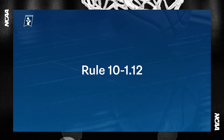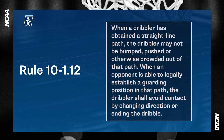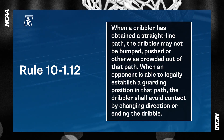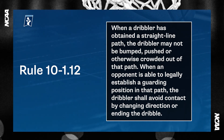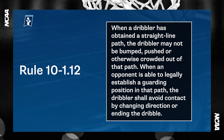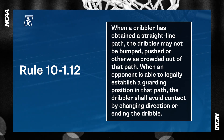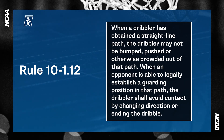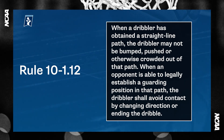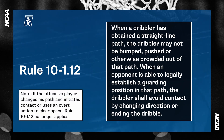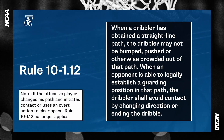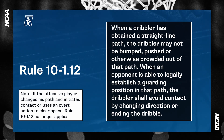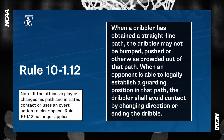Rule 10-1-12 says, when a dribbler has obtained a straight line path, the dribbler may not be bumped, pushed, or otherwise crowded out of that path. When an opponent is able to legally establish guarding position in that path, the dribbler shall avoid contact by changing direction or ending the dribble. Note, if the offensive player changes his path and initiates contact or uses an overt action to clear space, rule 10-1-12 no longer applies.